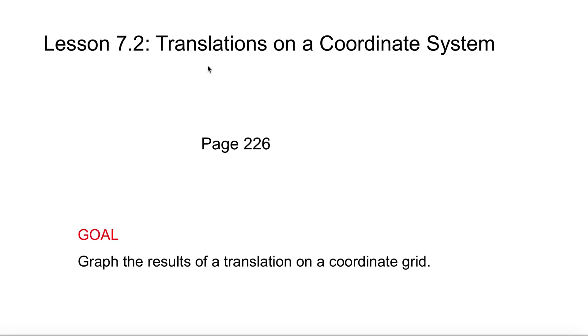Welcome to Lesson 7.2, Translations on a Coordinate System, found on page 226 of your textbooks, and the goal is to graph the results of a translation on a coordinate grid.